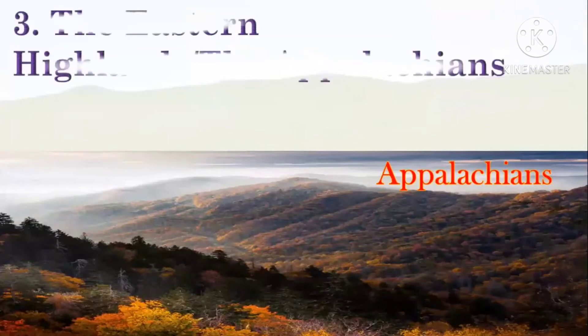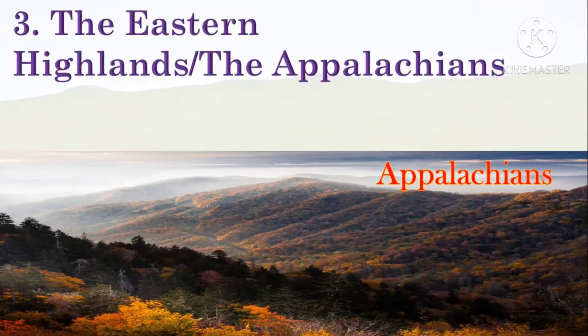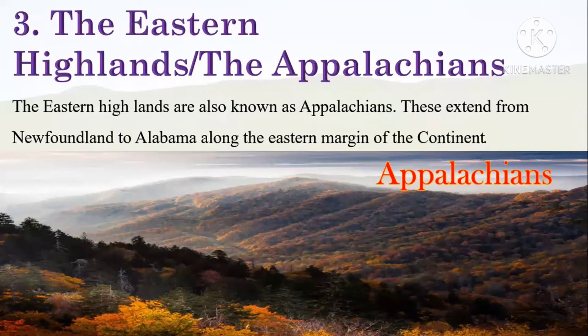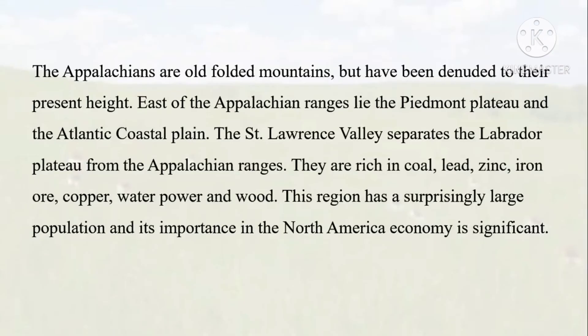Now let's study about the eastern highlands or the Appalachians. The eastern highland is also known as the Appalachians. These extend from Newfoundland to Alabama along the eastern margin of the continent. The Appalachians are folded mountains but have been denuded to their present height. East of the Appalachian ranges lie the Piedmont Plateau and the Atlantic Coastal Plain.